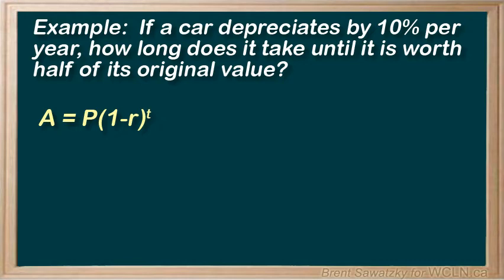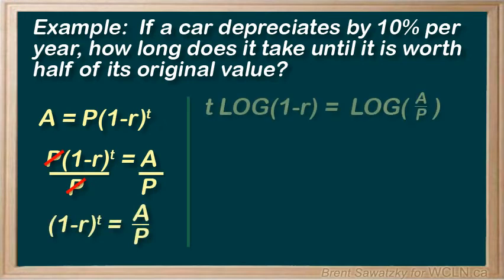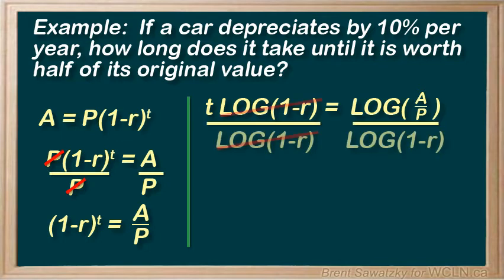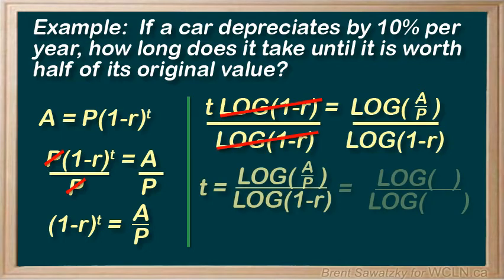Let's rearrange to solve for t. We'll switch sides, divide by p, and then log both sides, using our power rule to get the t out front. And one final division. And we're ready to plug in our values.